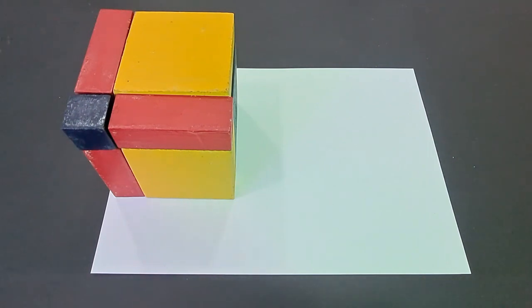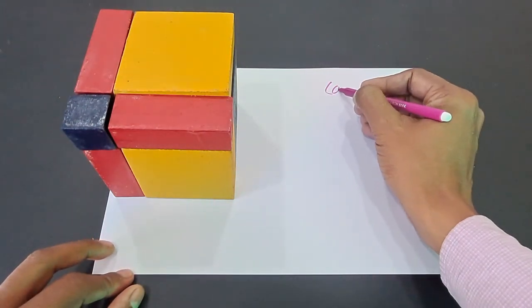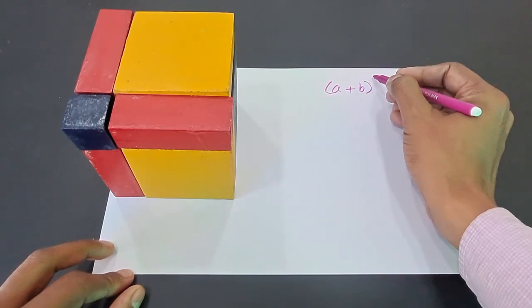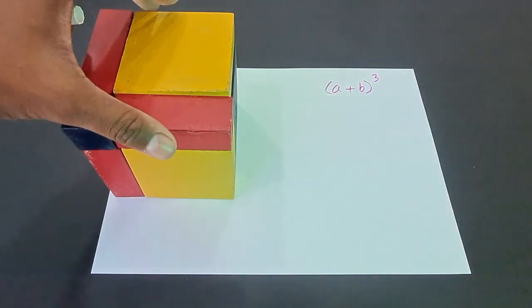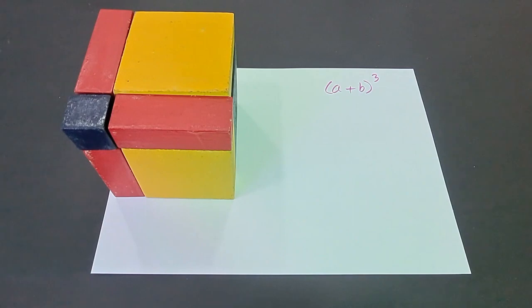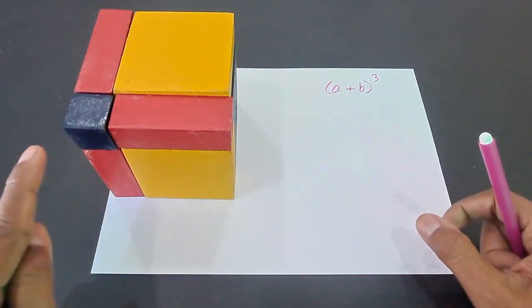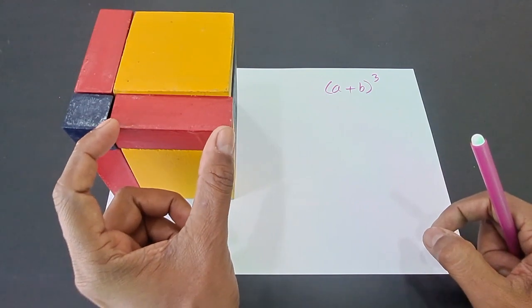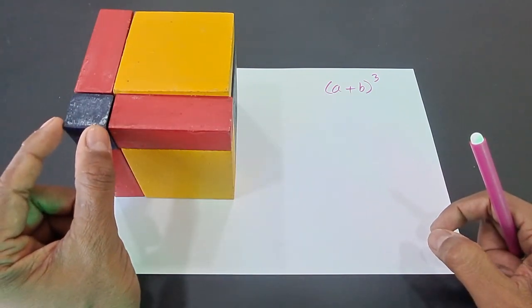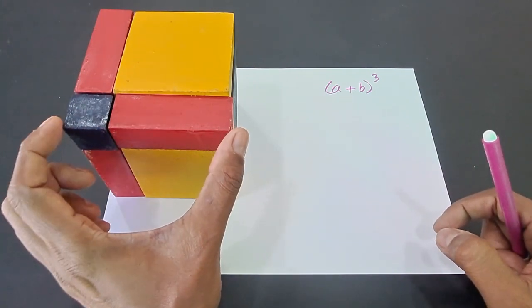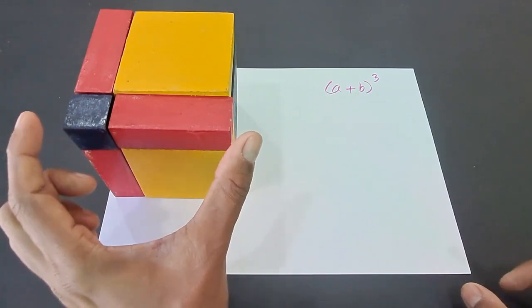To derive the identity (a+b)³, we need a cube in which you can see all the sides. If you see this particular side, this is a and this is b. So the edge of this particular cube is (a+b).